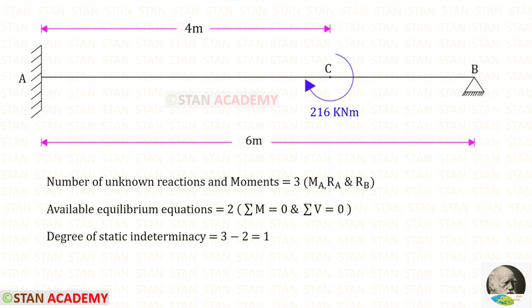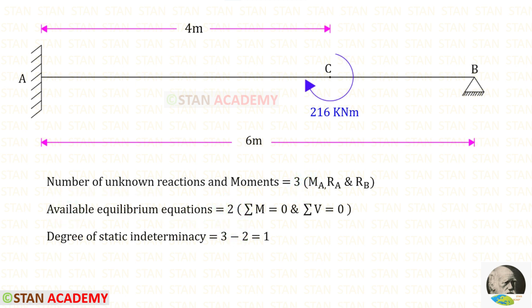Now let us find the degree of static indeterminacy. In this beam the number of unknown reactions and moments are 3. The available equilibrium equations are 2. The degree of static indeterminacy will be 3 minus 2, so that it will be 1.